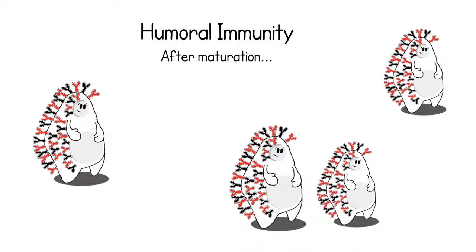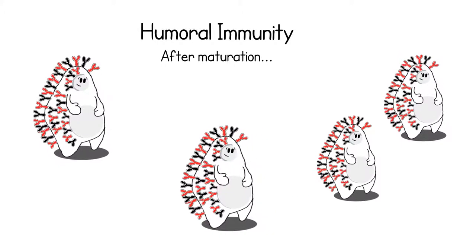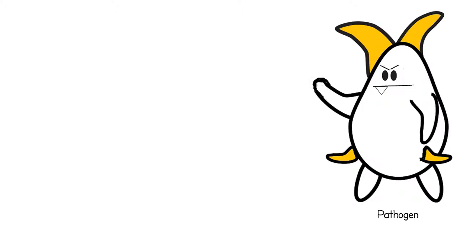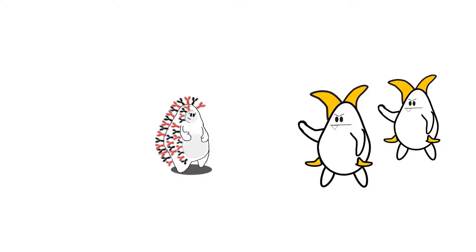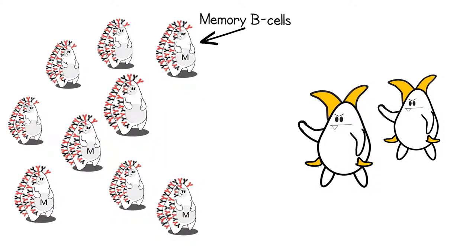Promptly after maturation, the B cells will begin to move throughout the lymphatic system, seeking areas where they are needed. Antigens refer to the types of proteins which exist on the surface of different pathogens. When these antigens are encountered by B cells, it will trigger proliferation to occur, creating mass amounts of effector and memory B cells.